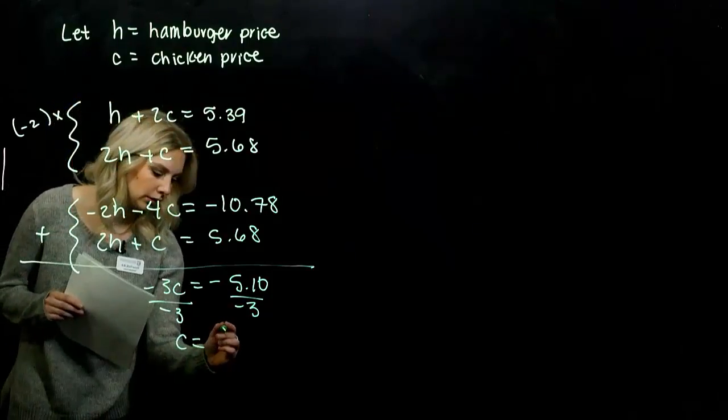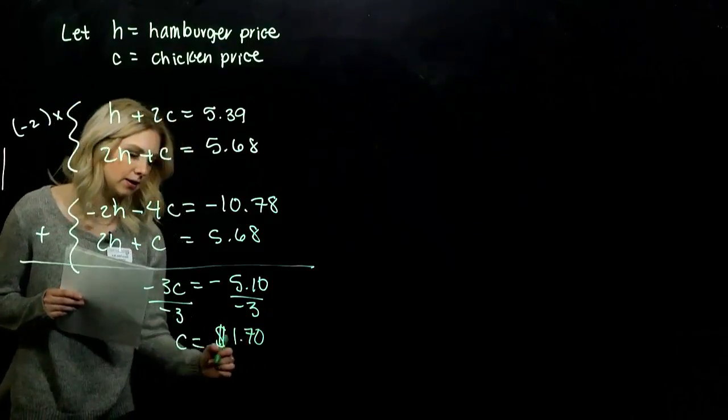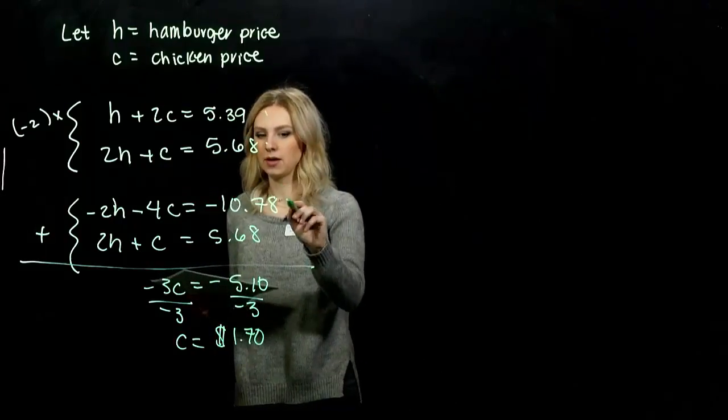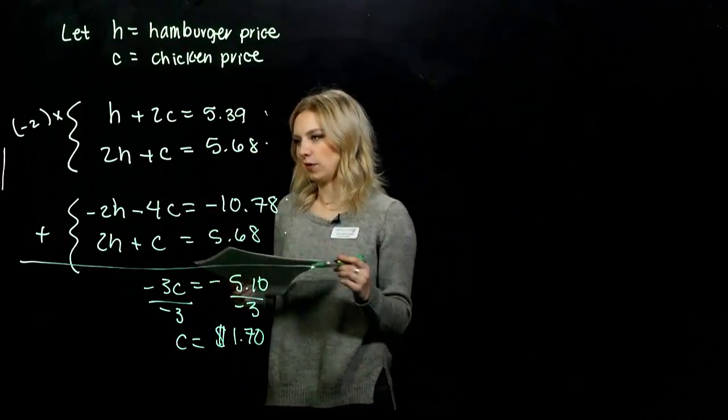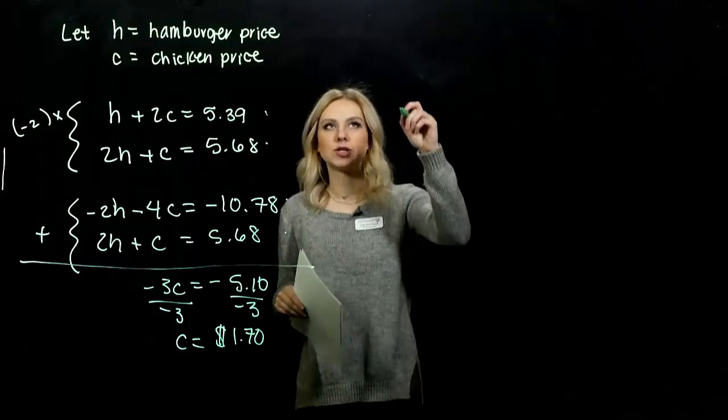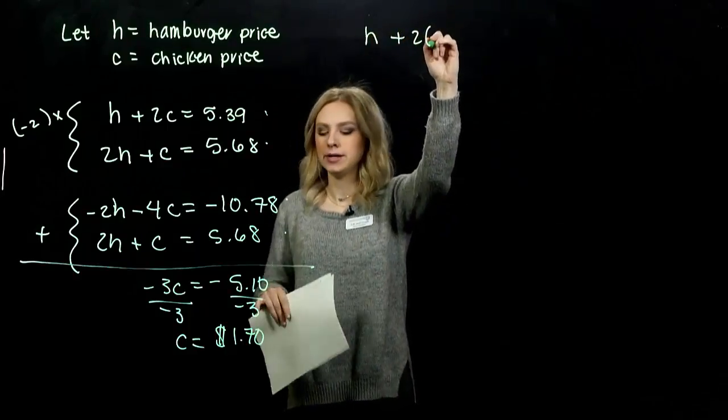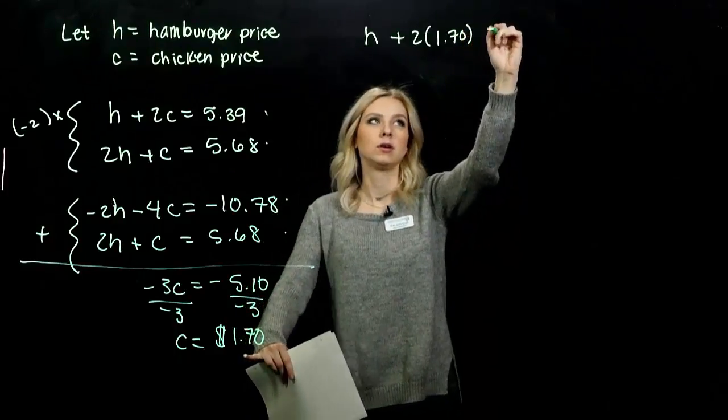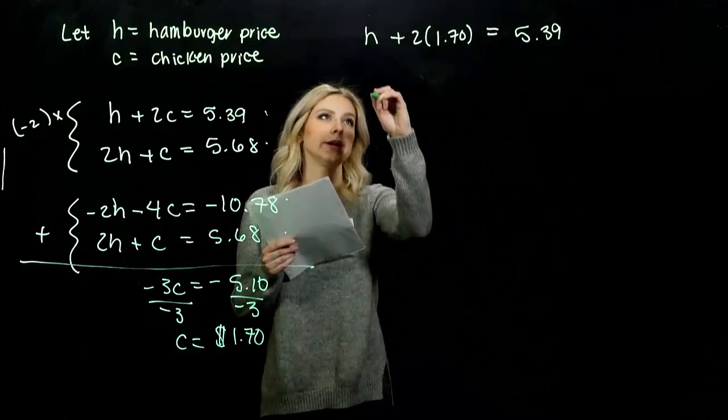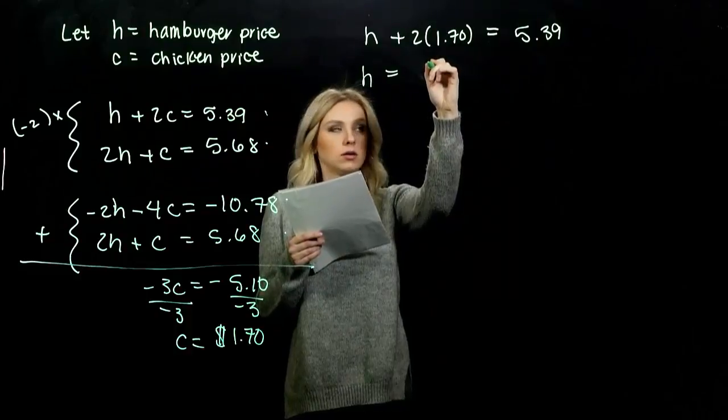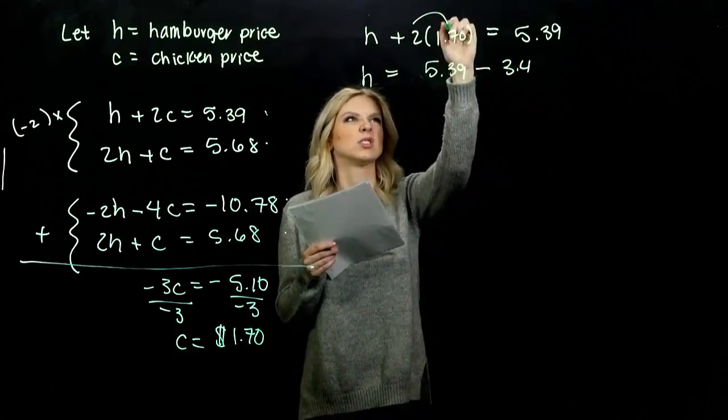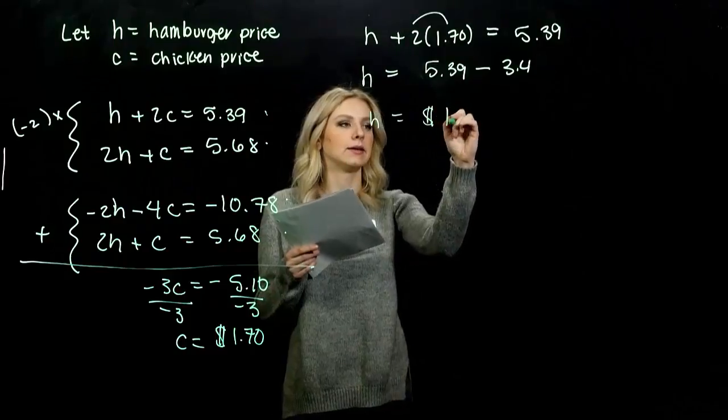But we also need the hamburger price, so we can plug it back into any one of these. Doesn't matter which. I'm going to go for the first, since H is already not necessarily isolated, but it has a coefficient of 1 on the front. So we won't have to do division. So H + 2 times what I know C is equivalent to, $1.70, that totals 5.39. So we just want to solve for H. So H is going to be 5.39, and I'm going to subtract off the value 3.4, which results from here. And when we combine those, we're looking at $1.99.